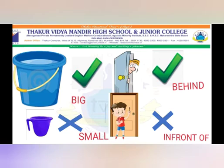Tick the person who is behind and cross the person who is in front. Shyam is standing behind the door. Ram is standing in front of the door. Here students, we will put a tick mark on Shyam standing behind the door, and a cross mark on Ram standing in front of the door.